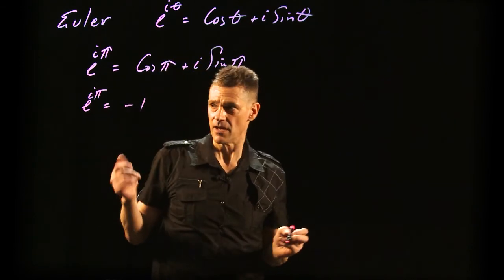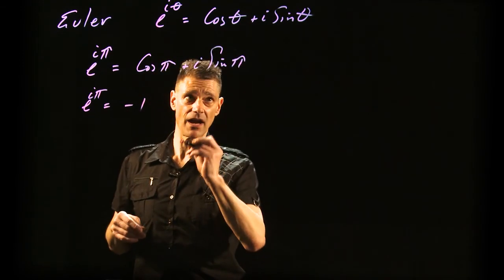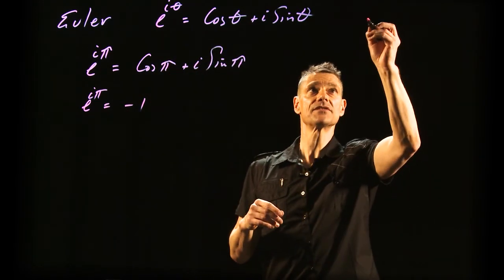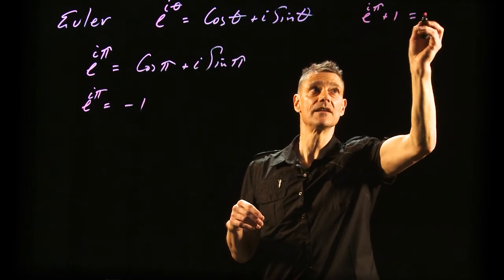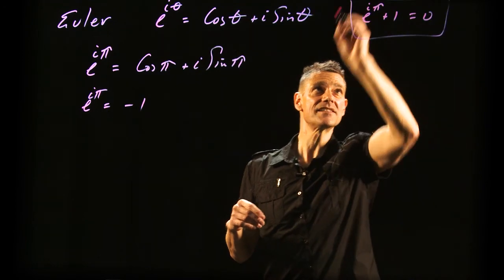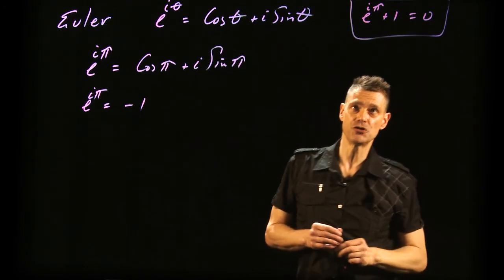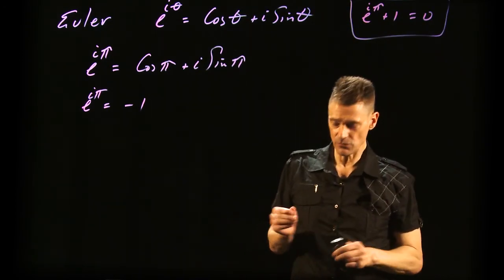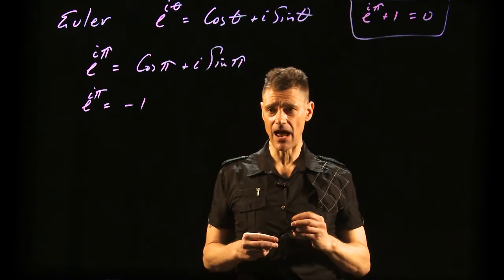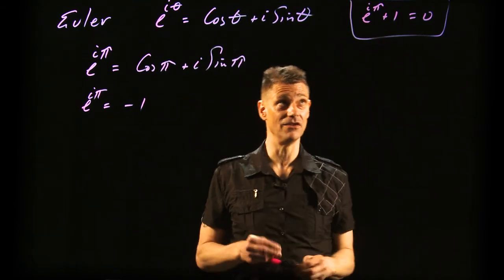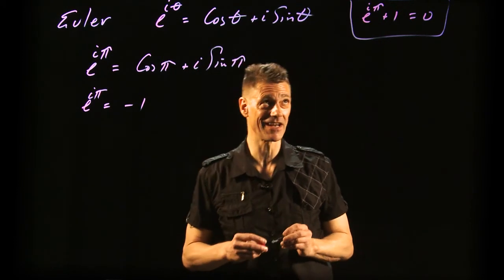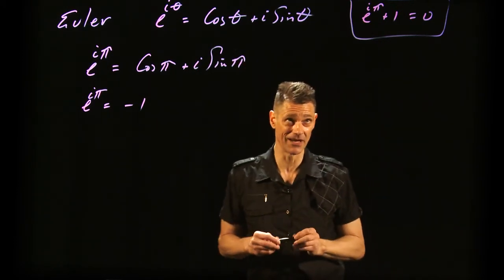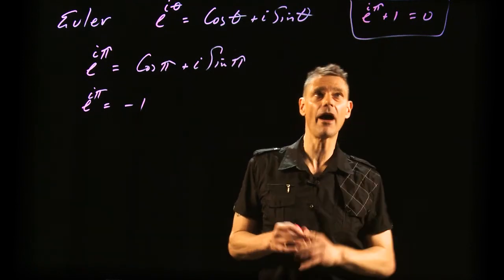Adding one to both sides: e^(iπ) + 1 = 0. This is the jaw-dropping formula that you'll find tattooed on so many math grad students. I'm totally serious about this. I don't actually have this one tattooed—I think it was because I didn't have the money at the time. Here's why.